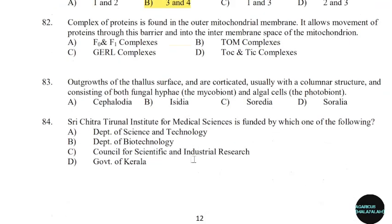82nd question: A complex of proteins found in the outer mitochondrial membrane that allows movement of proteins through this barrier and into the inner membrane space of the mitochondria. Correct answer: Option B — TOM complex.